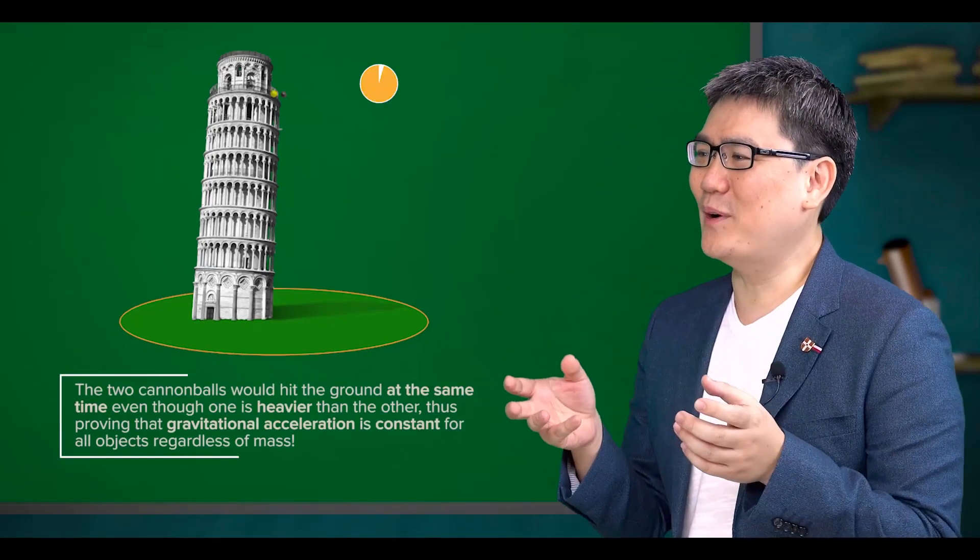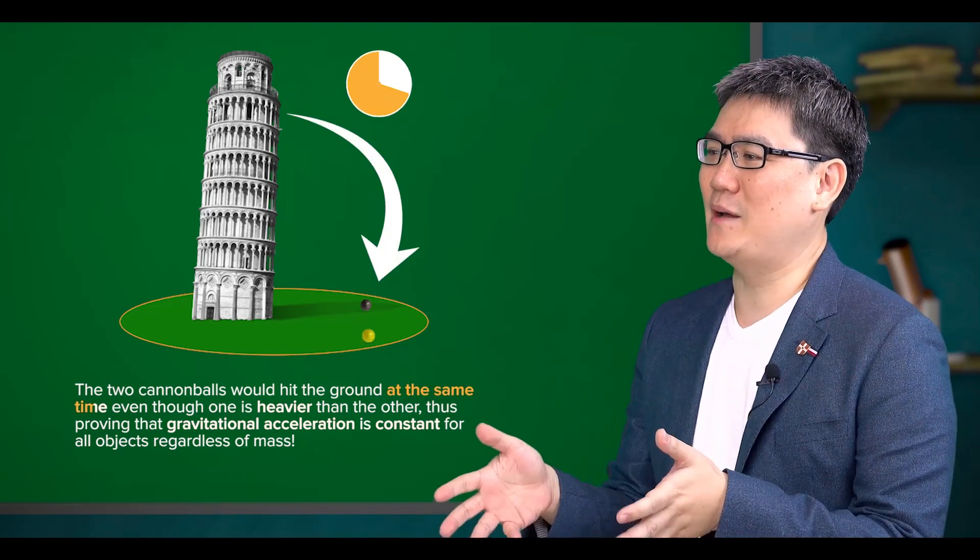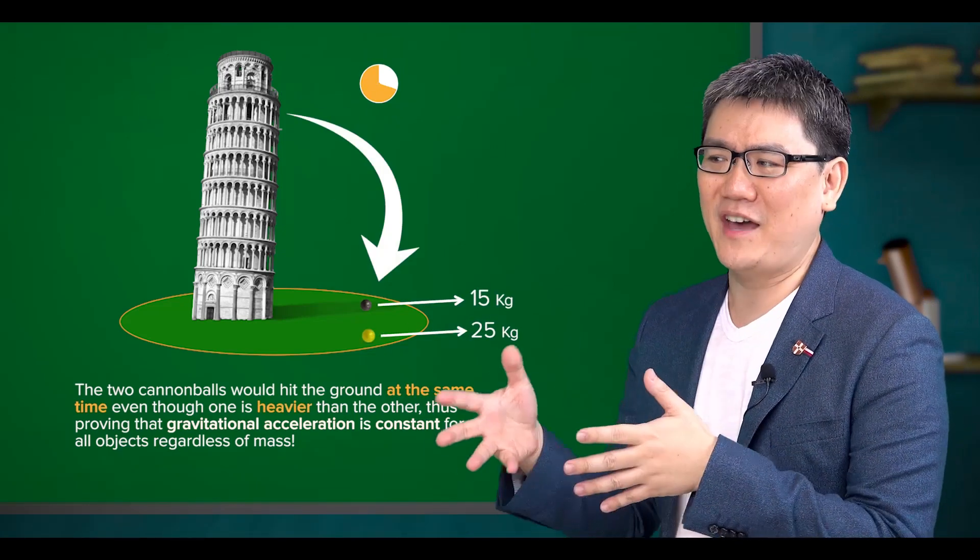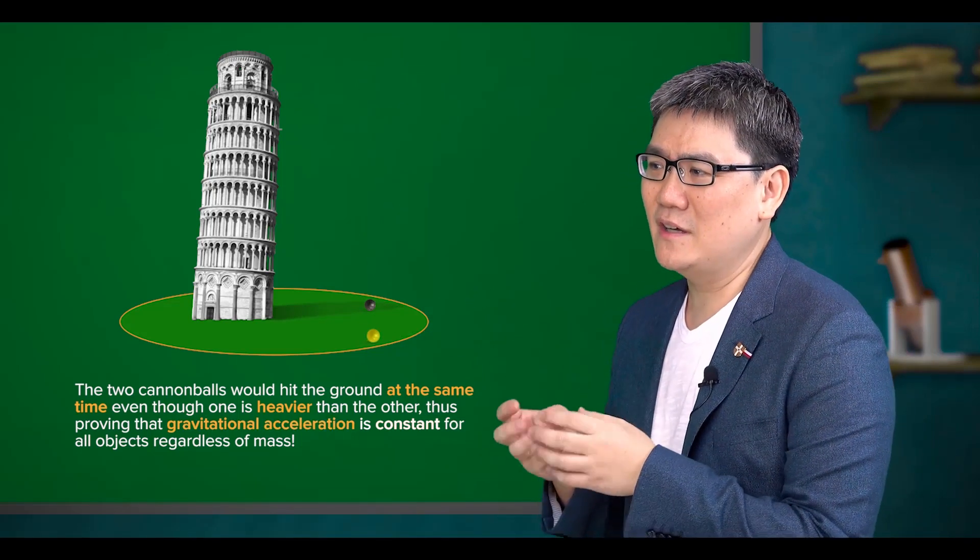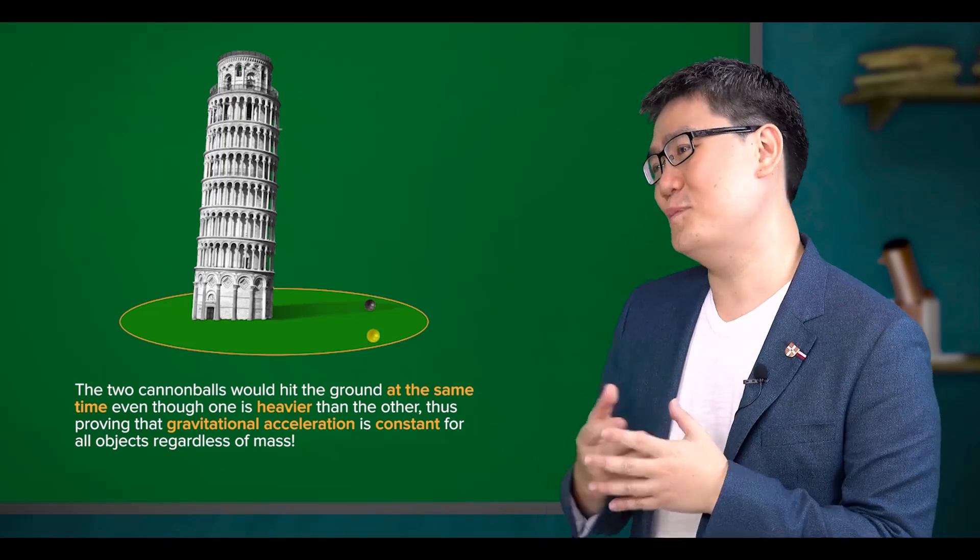The two cannonballs hit the ground at the same time, even though one is heavier than the other, thus proving that gravitational acceleration is constant for all objects, regardless of mass. This is amazing!